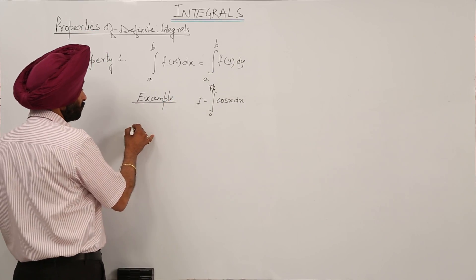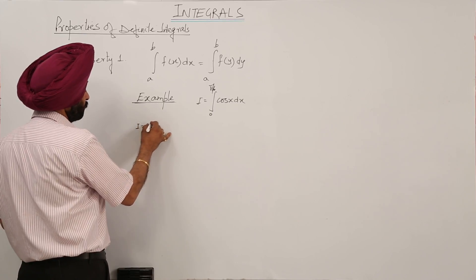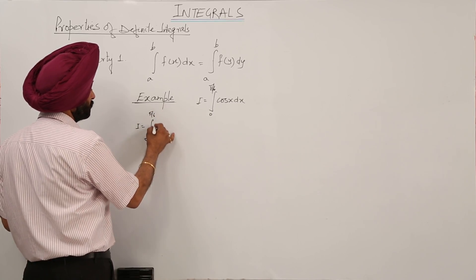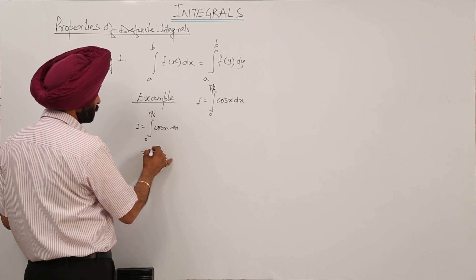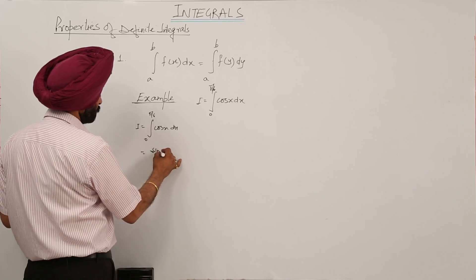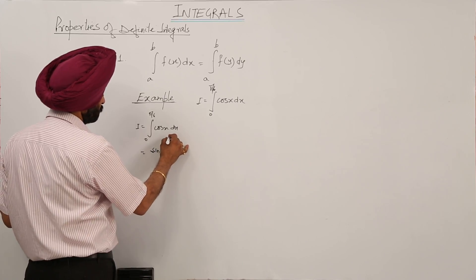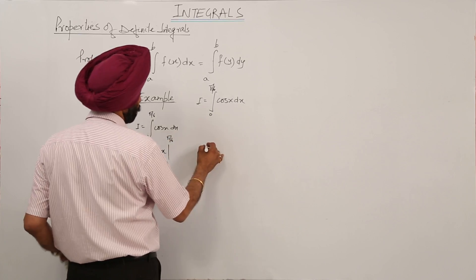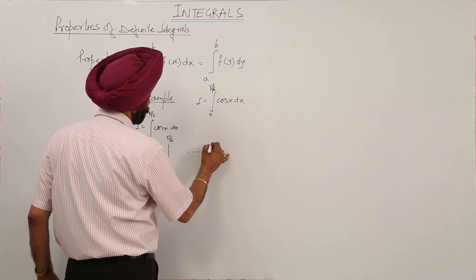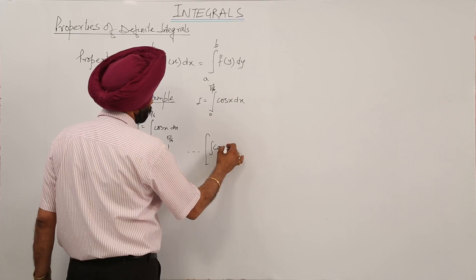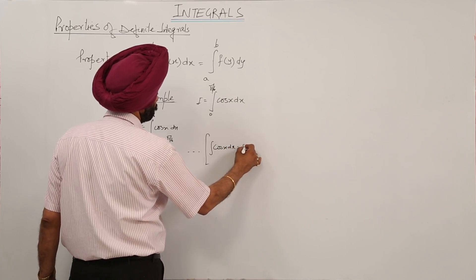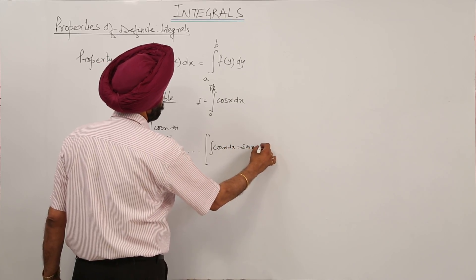So now integration of 0 to pi by 6 cos x dx. Now this is equal to sin x 0 to pi by 6. Now integration of cos x dx is equal to sin x plus c.